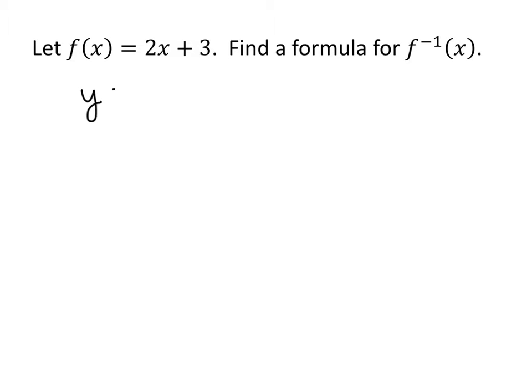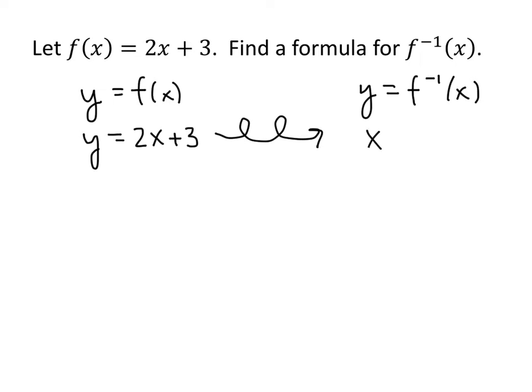So what we have is y equals f of x. And what we want is y equals f inverse of x. So we have y equals 2x plus 3. The relationship between an original function and its inverse is that the roles of x and y are reversed. We switch x and y. Everything that used to be an x now becomes a y. Everything that used to be a y now becomes an x. When we do that here, what we end up with is an equation that looks like x equals 2y plus 3.